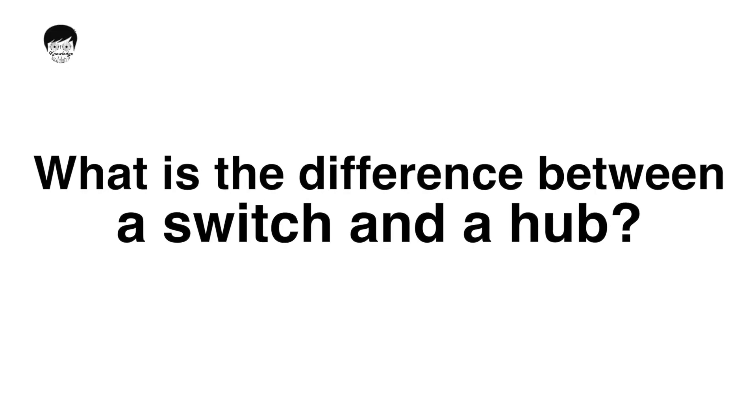The next question is: what is the difference between switches and hubs? Nowadays hubs are not used because switches work at the next layer above hubs and are very intelligent. Switches know which traffic to pass where, while a hub is not intelligent — it sends traffic to all ports. A switch knows where to send traffic specifically, which makes switches very useful, and nowadays only switches are in use.